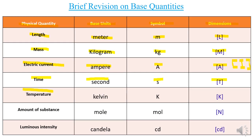For temperature, its base unit is the kelvin, its symbol is capital K, and its dimensions are capital K. For amount of substance, its base unit is the mole, its symbol is little mol, and its dimensions are capital N. For luminous intensity, its base unit is the candela, its symbol is little cd, and its dimensions are little cd. Note that the symbols for dimensions are always enclosed in square brackets, indicating we are expressing a quantity in terms of base quantities using dimension notation.